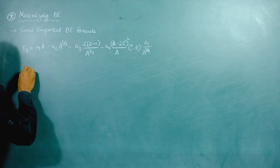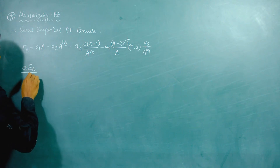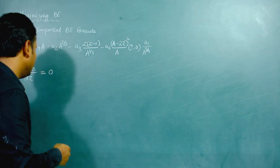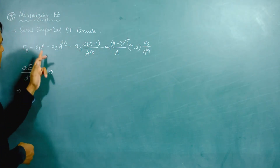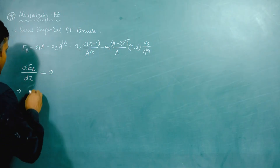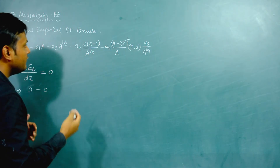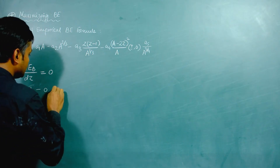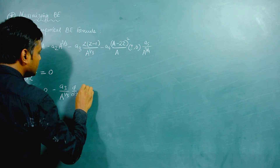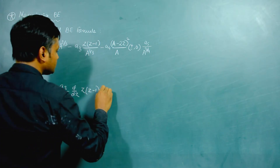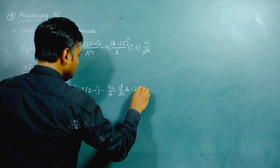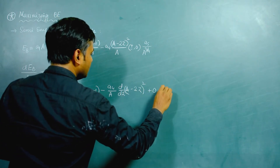To find maximum binding energy, we take the derivative of binding energy with respect to Z and set it equal to zero. The first term, second term, and last term of the semi-empirical formula do not contain Z, so their derivatives are zero. The relevant terms are the third (Coulombic) and fourth (asymmetry) terms. Taking d/dZ: minus A3 divided by A^(1/3) times d/dZ of Z(Z−1), minus A4 divided by A times d/dZ of (A−2Z)², plus 0, set equal to zero.